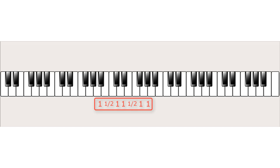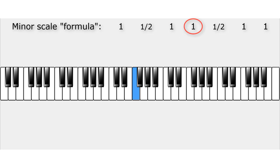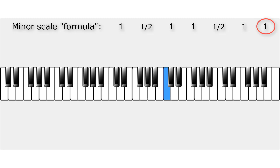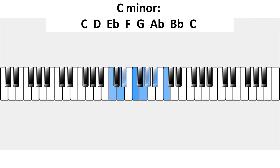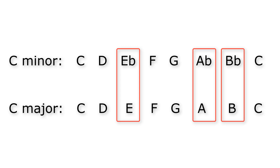Let's apply this formula to find the C minor scale. Starting on C: one whole tone to D, a halftone to E-flat, a whole tone to F, again a whole tone to G, a halftone to A-flat, a whole tone to B-flat, and finally a whole tone to C. This is the C natural minor scale. Comparing C major with C natural minor, you can see that three notes are different — the third, sixth and seventh notes are a halftone lower in the natural minor scale compared to the major scale.